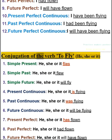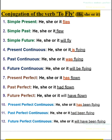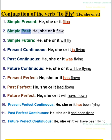Conjugation of the verb to fly — he, she, or it: 1. Simple present — he, she, or it flies. 2. Simple past — he, she, or it flew. 3. Simple future — he, she, or it will fly.